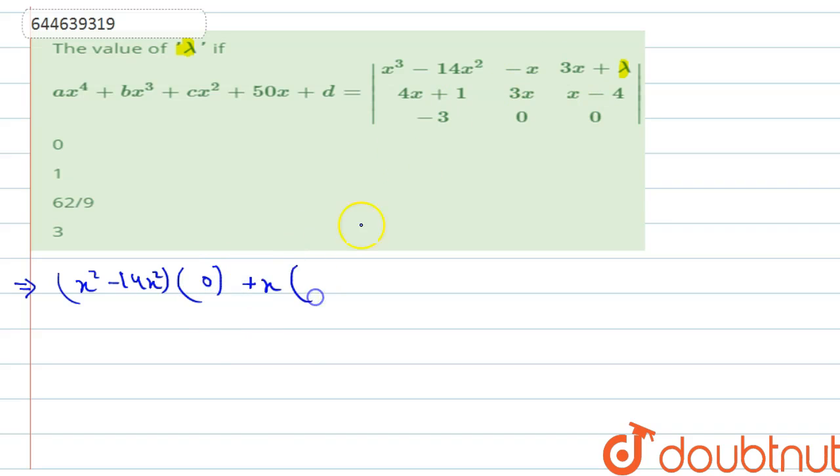This is plus x multiplied by this one, 0 multiplied by this is 0. There will be 3 multiplied by x minus 4 here plus 3 times x plus lambda. This is 0 and this is 9x.